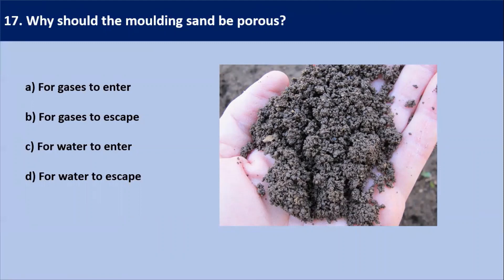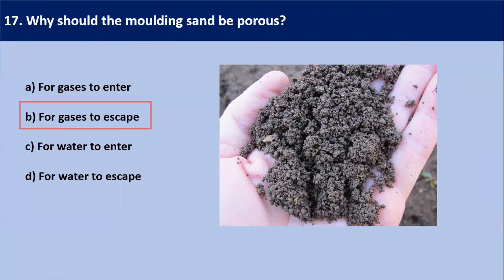Next question: why should the molding sand be porous? Molding sand has holes in it and is known for holding some moisture content. A molding sand should be porous and permeable so that gases have a free path for escaping. Our answer is B — for gases to escape.